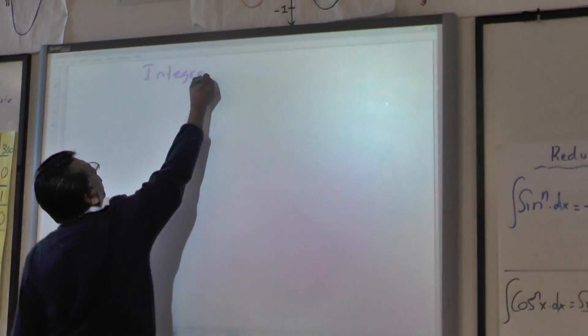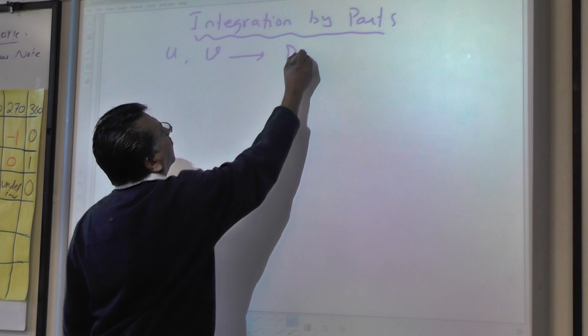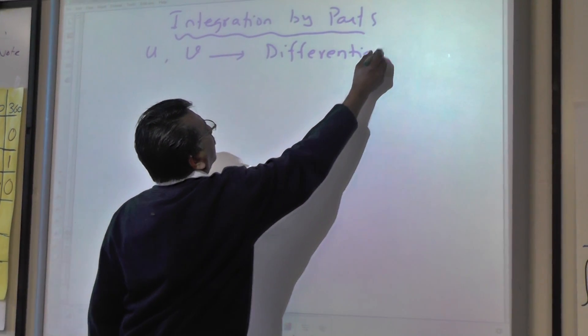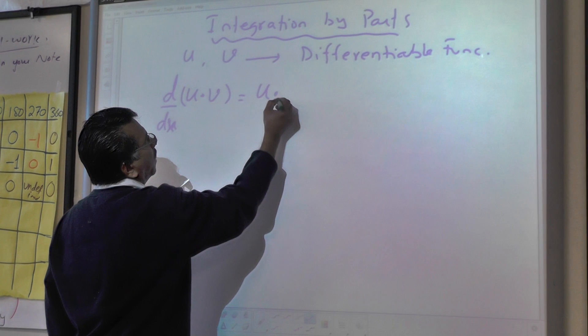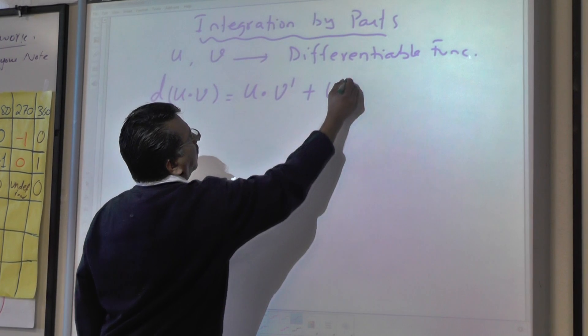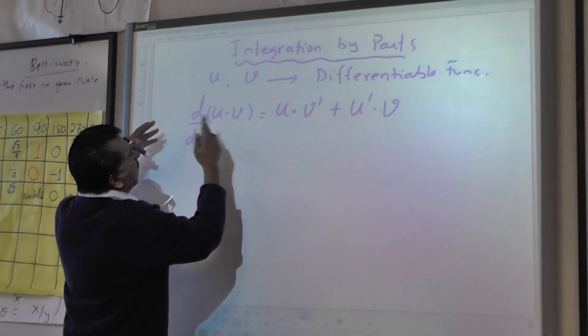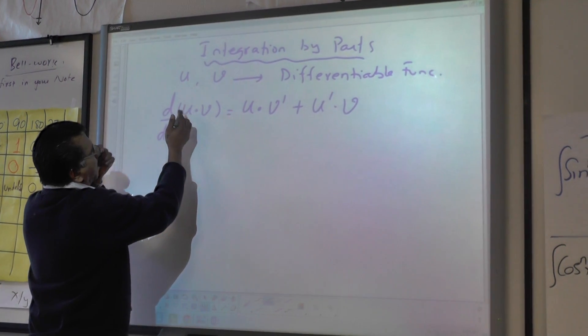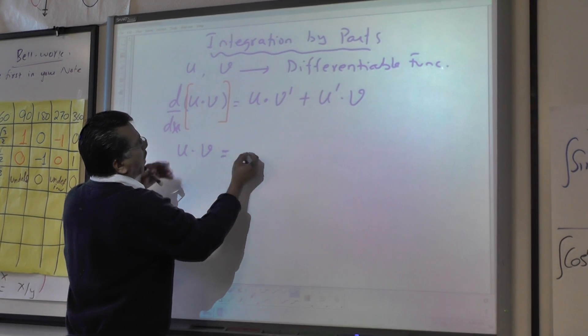From derivatives, we know that if u and v are two differentiable functions, we can find their derivatives. If we want to take the derivative of the product u times v, remember: keep the first times the derivative of the second, plus the derivative of u times the second. We already know this. The derivative of the entire product uv goes back to uv — I'll put a red color to show that this uv is the entire derivative of these two parts.